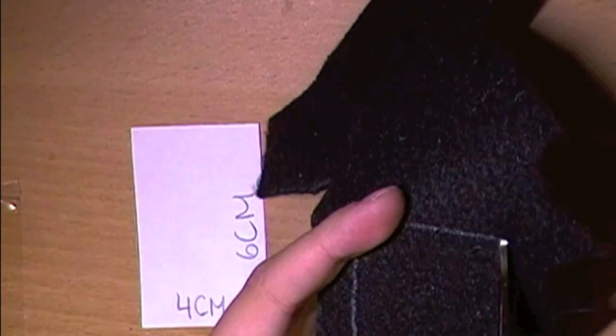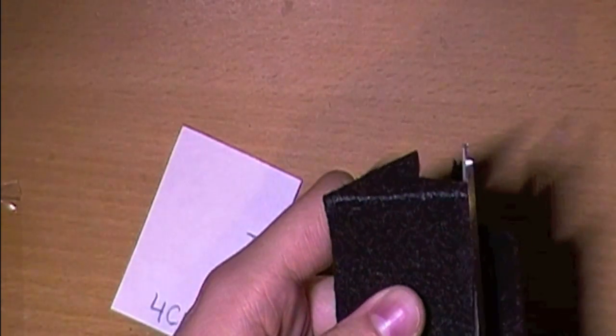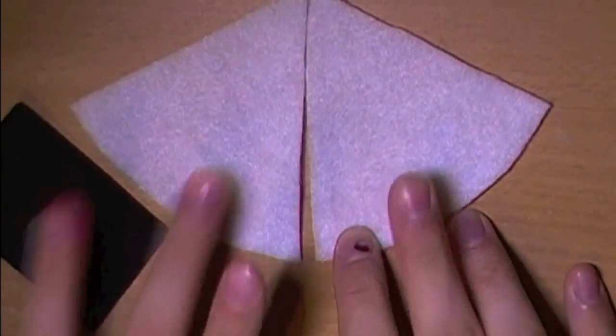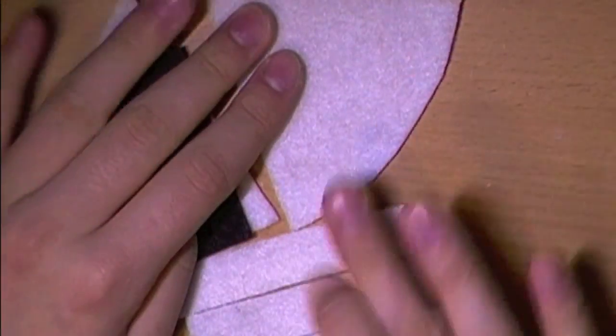So once that shows up you're just going to go ahead and cut it out with your scissors again. And then the only last thing for felt that you need to do is cut out 1cm thick strips that will be the length of the straight sides of the wedges and one that will fit the curved side as well.